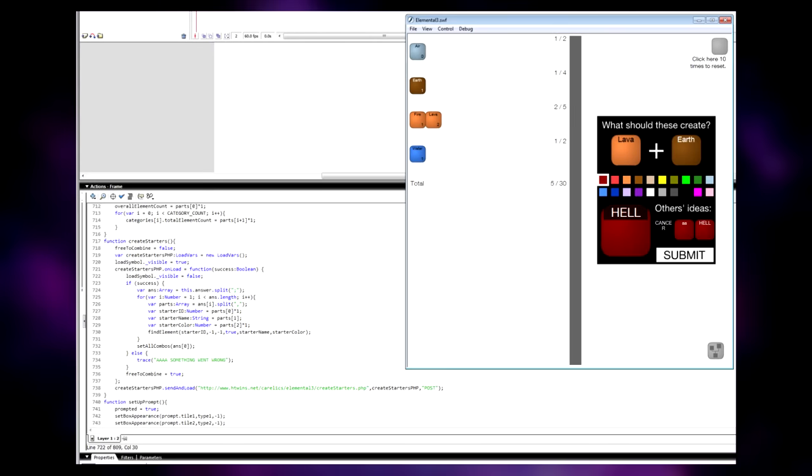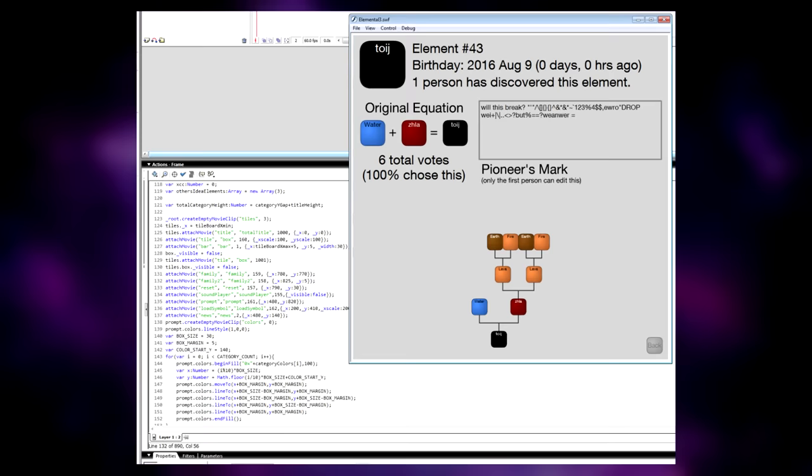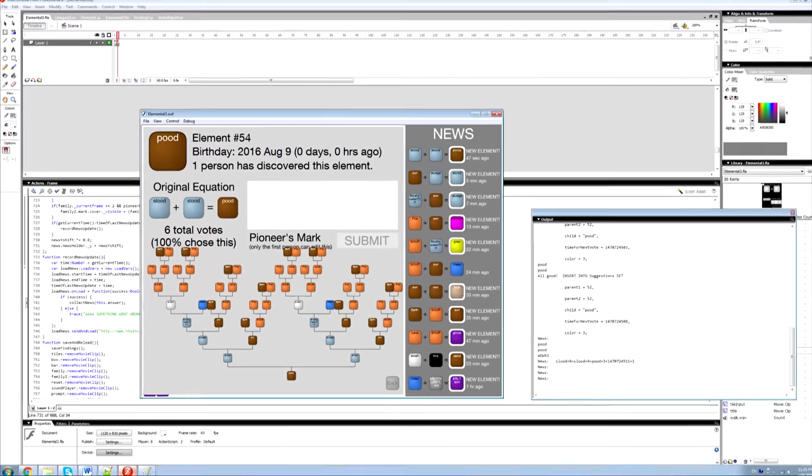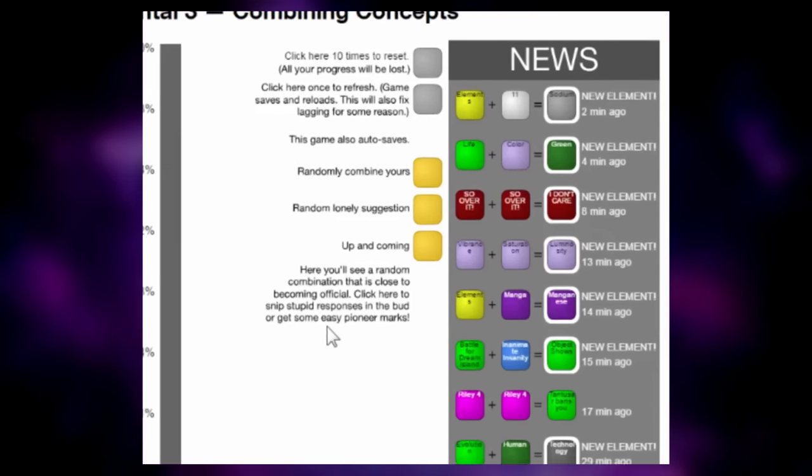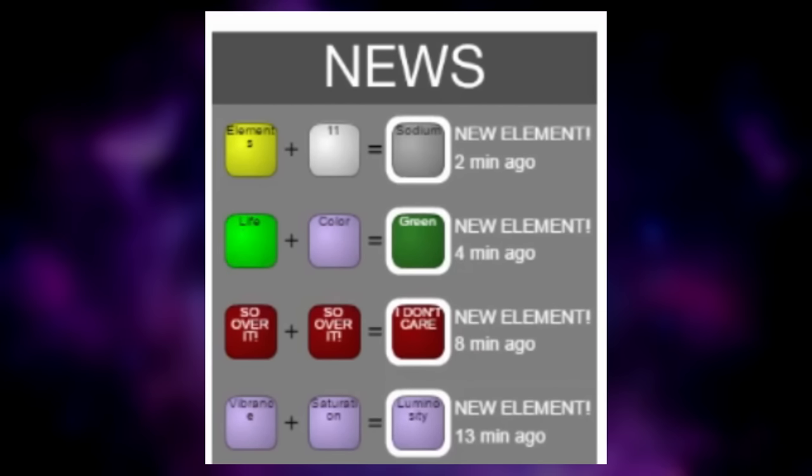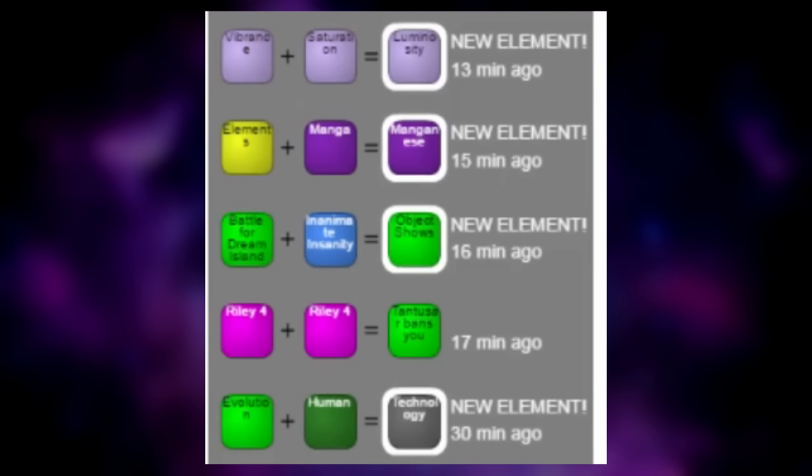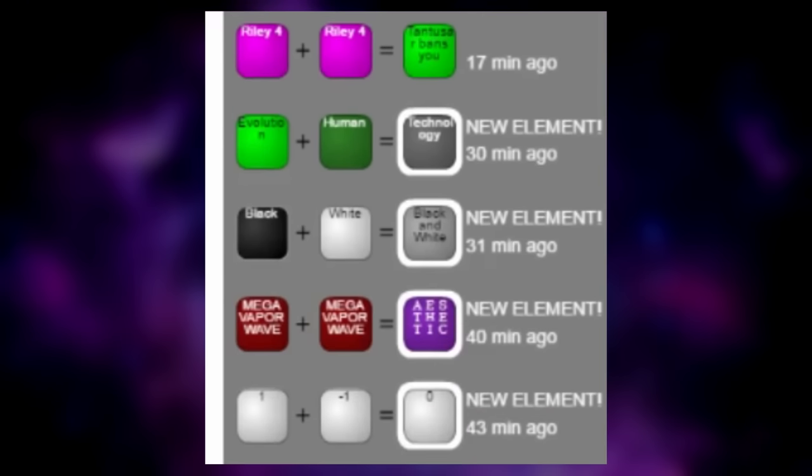To make my game unique though, I spent a good week coding in a crowdsourcing feature. Basically, all element recipes were devised and voted on by the general user base, and they got added into the official game only once they got enough voter approval. No recipes were hardcoded by me, the creator.